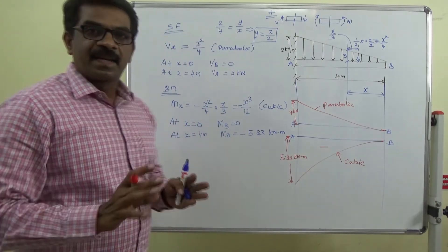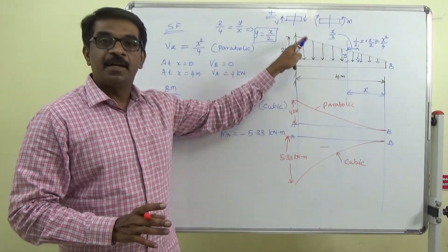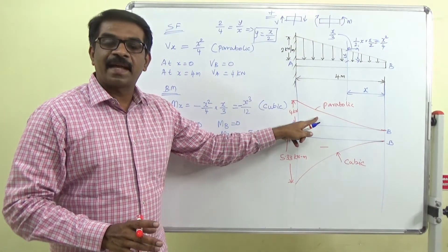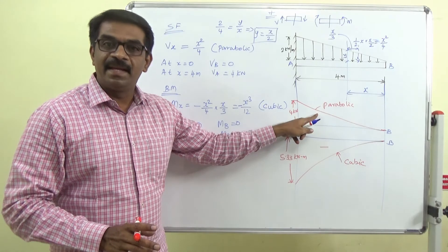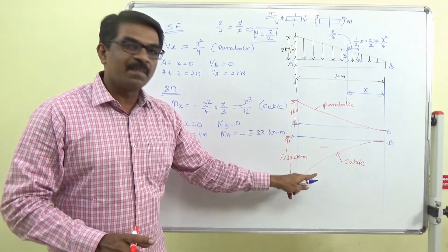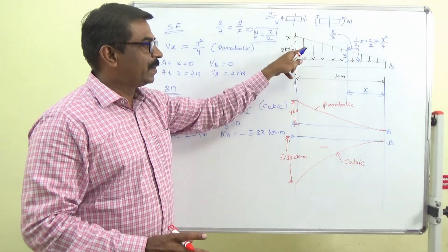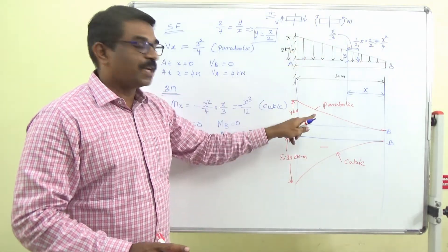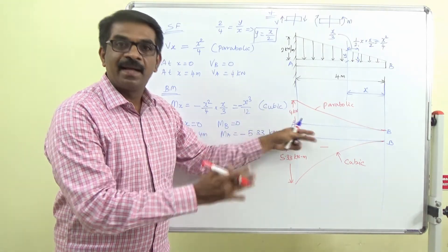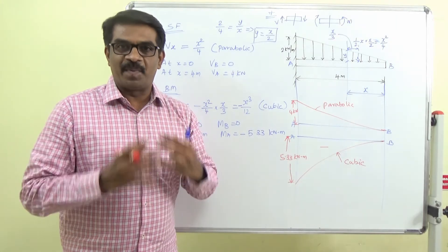To summarize: when you have a uniformly distributed load, the shear force diagram has a linear variation and the bending moment diagram is parabolic. But for a uniformly varying load, the shear force diagram is parabolic and the bending moment diagram is one order higher — it is cubic.